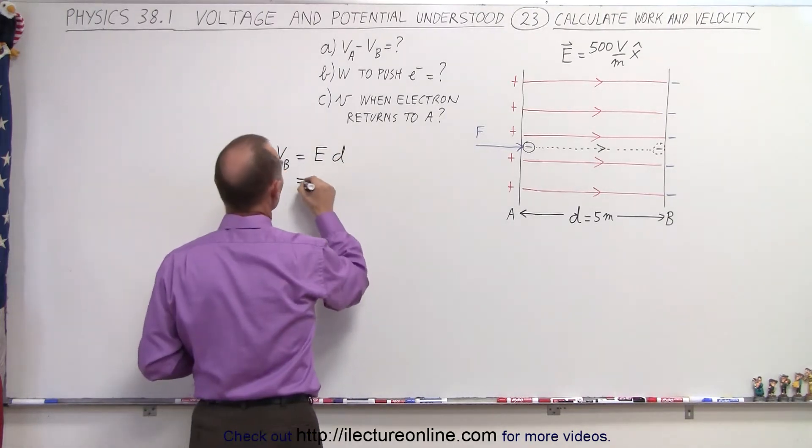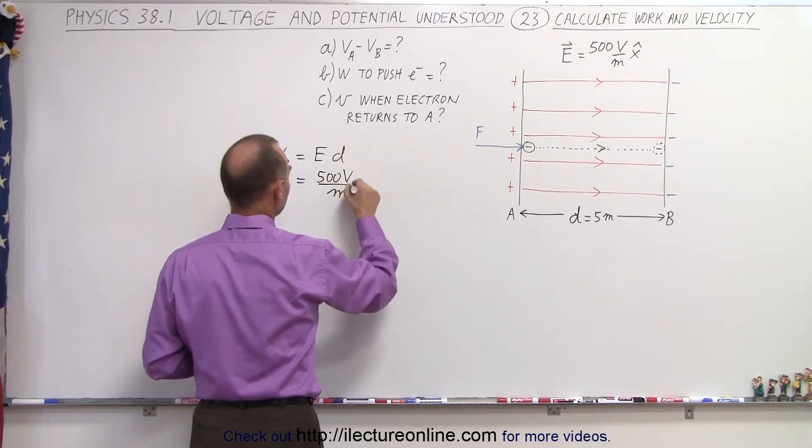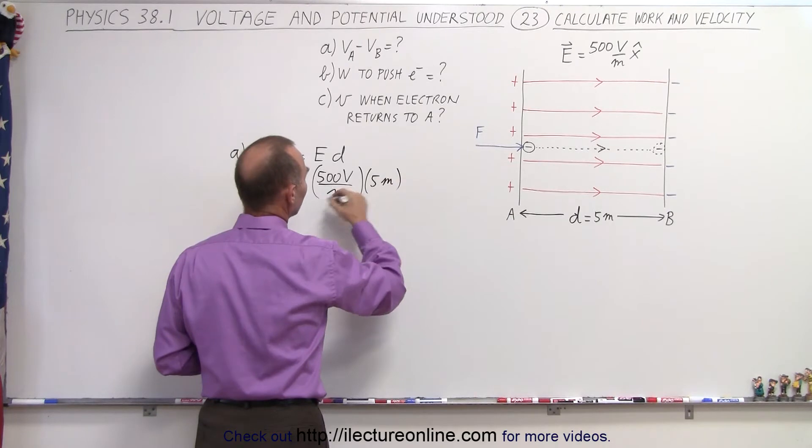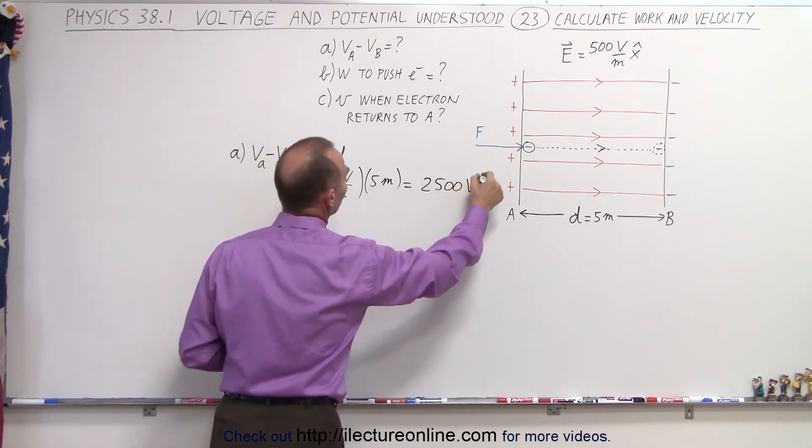So in this case, that's going to be equal to 500 volts per meter multiplied times 5 meters. The meter cancels, and that gives us 2,500 volts between the plates.